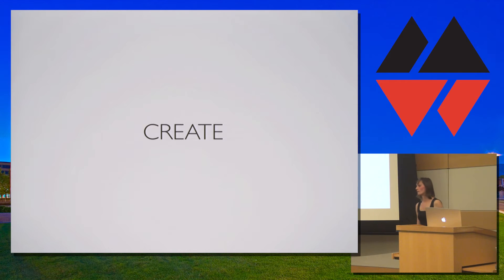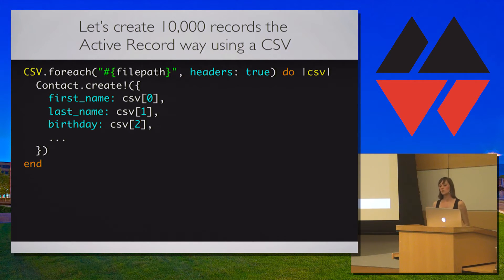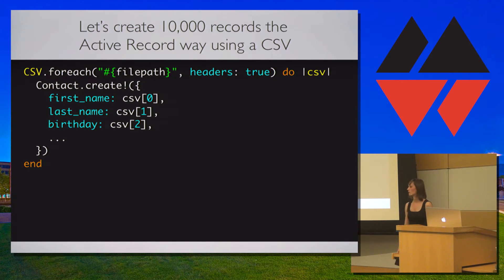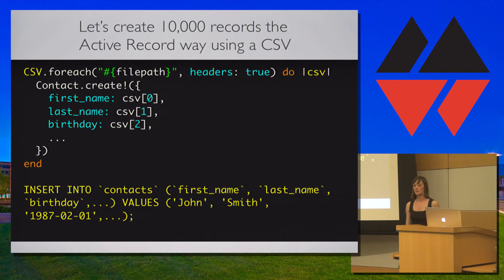Let's start with creating. Imagine we have a CSV spreadsheet we want to use to create our contacts, and this spreadsheet has 10,000 rows. We can run through each row of the CSV and create each individual contact with ActiveRecord. This will construct an insert statement for each individual contact, meaning the insert statement will be run 10,000 times, which will take quite a while.